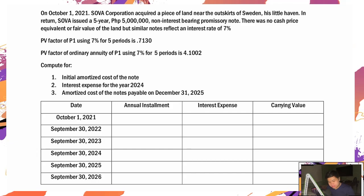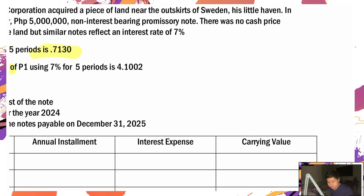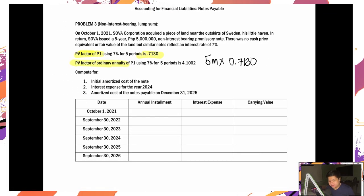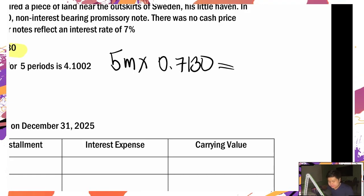Anong gagamitin ko ngayon? Yung PV factor of 1, o PV factor of an ordinary annuity? E di ito na — PV factor of 1. So 5 million times 0.7130. Ang lalabas dyan ay 3,565,000.